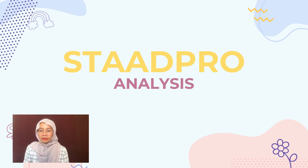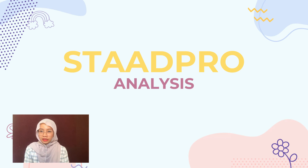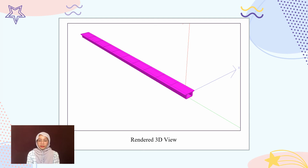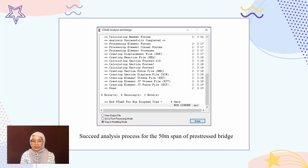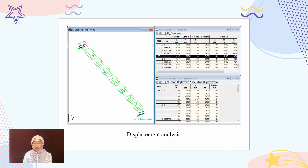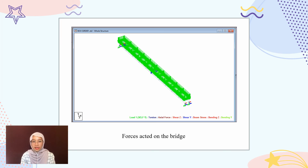Hi, my name is Nora Akmazatul Shiazana. I will proceed with the analysis using STAAD Pro. This is the rendered 3D view of the box girder. The total span length is 50 meters, designed as 5 times 10-meter plates. This is the isometric view of the box girder design. The analysis output for the 50-meter bridge span shows 0 errors, confirming the design is successful. This is the displacement analysis of the beam, and the last output shows the forces applied on the bridge.